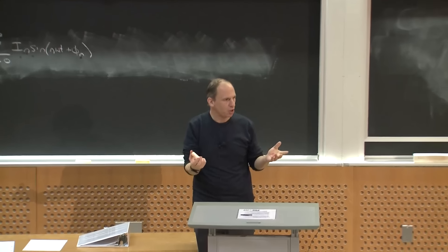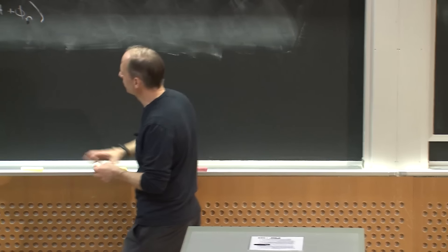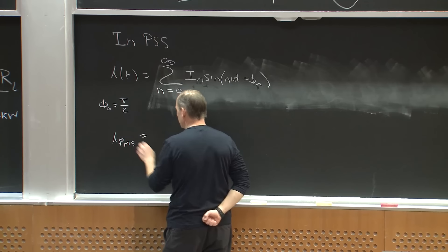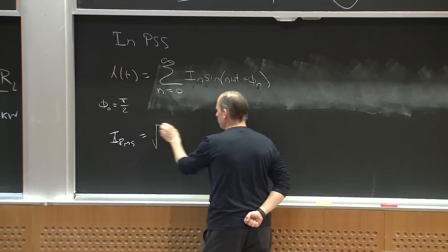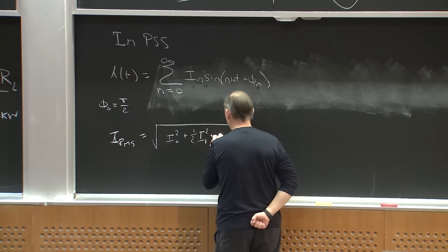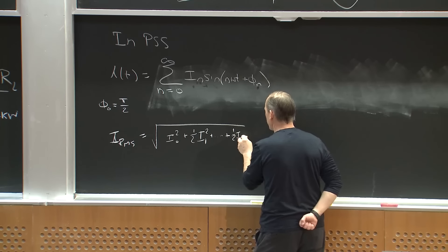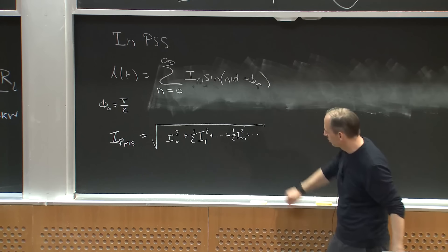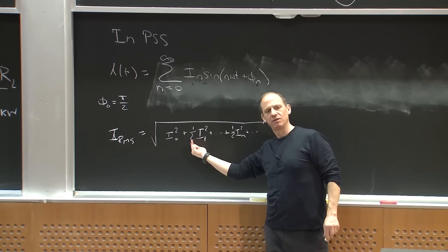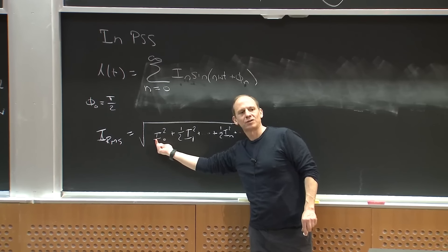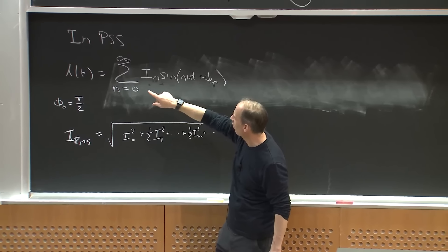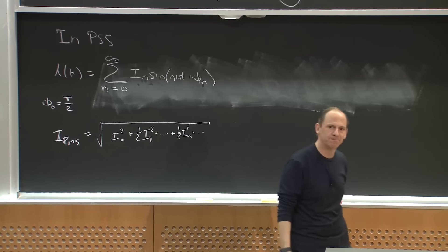You can show what the RMS of that waveform is using this Fourier series. I_RMS equals the square root of I₀² + ½I₁² + ½I_n² and so forth — a sum of squares, where the halves come from the mean square of the individual sinusoidal components and I₀ is constant so has no factor of ½. You apply the definition of RMS and use orthogonality, and it pops out.